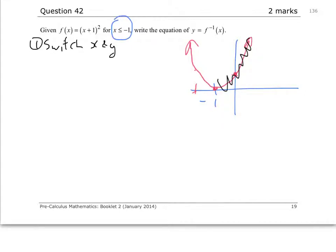So the first step that we do is we switch x and y. And so our original equation was y equal x plus 1 all squared. For x less than or equal to negative 1, let's switch x and y. So my new equation becomes x equal y plus 1 squared, where y is less than or equal to negative 1.